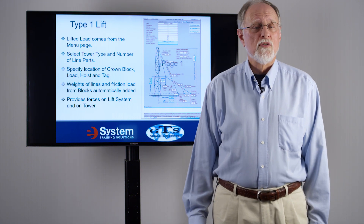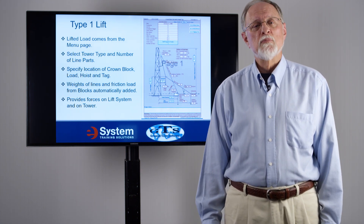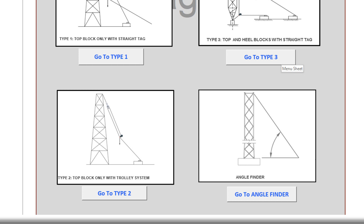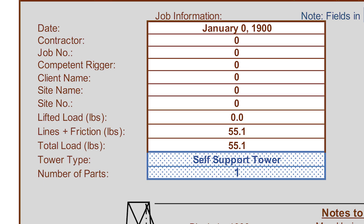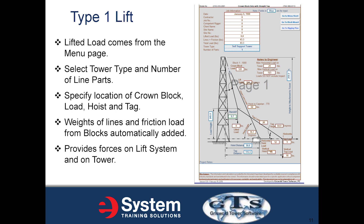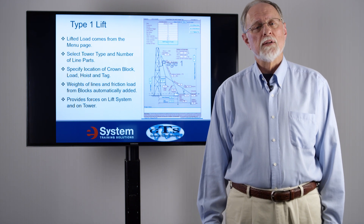We're now going to go through the three different types of lifts — there are three tabs for that. The lifted load on each tab comes from the menu page. You select the tower type and the number of line parts for the lift. On Type 1, you specify the location of the crown block on the tower and provide the location of both the load hoist and the tag hoist. The weights of the lines and the friction load from the blocks are automatically added, and the forces are shown on the sheet for both the lift system and the tower.